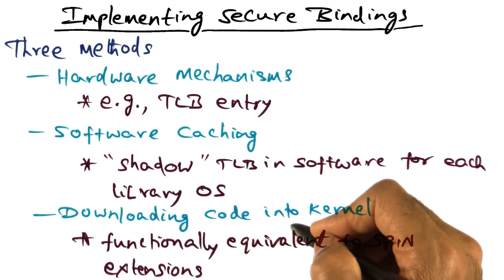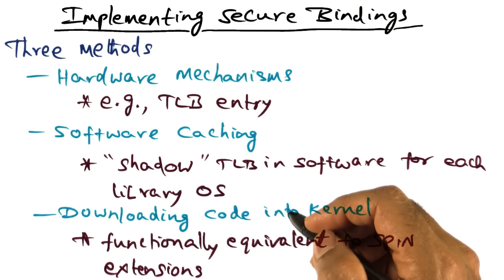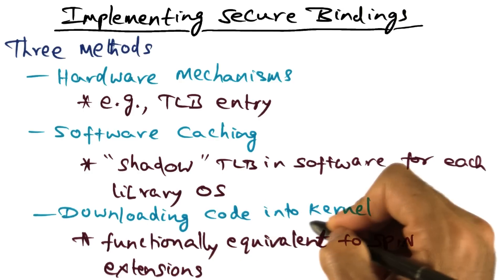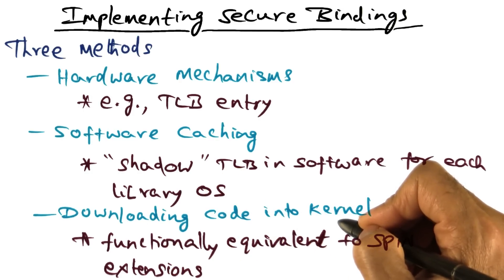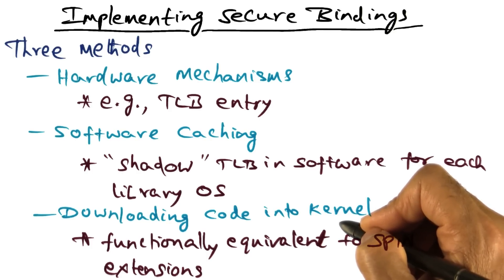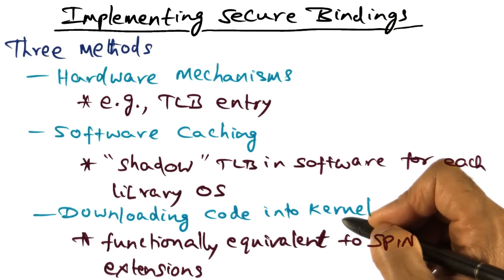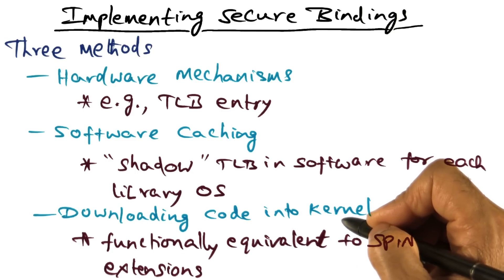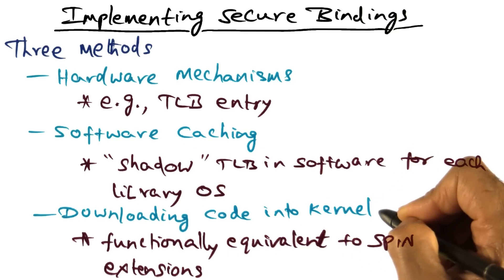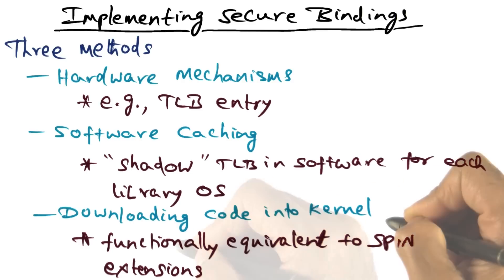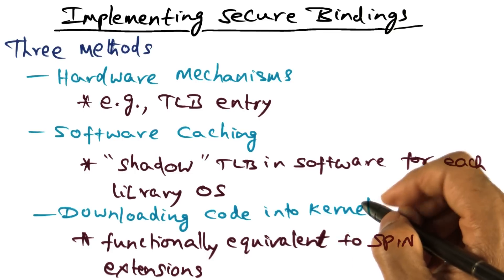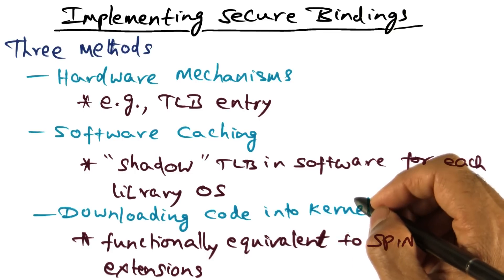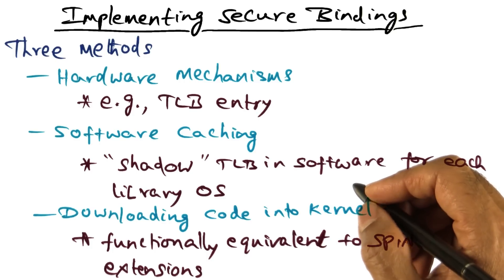The third mechanism that exo-kernel has for establishing a secure binding on behalf of an operating system is downloading code into the kernel. This is simply to avoid border crossing by inserting specific code that an operating system wants executed on its behalf. The packet filter is an example of downloading code into the kernel that needs to be executed on behalf of a particular guest operating system. This idea is very similar to the SPIN idea of extending the kernel with logical protection domains that are created and dynamically linked in.